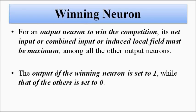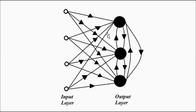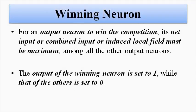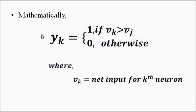The output of the winning neuron is set to 1. For example, if the first neuron has the maximum net input, its output is set to 1 and the other two neurons are set to 0. If the second output neuron wins, its output value is 1 and the top and bottom neurons are 0. If the bottom neuron wins, its output is 1 and the first and second neurons are 0.